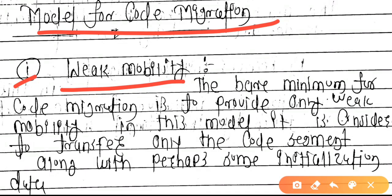The bare minimum for code migration is to provide only weak mobility. In this model, it is considered sufficient to transfer only the code segment, along with perhaps some initialization data. So weak mobility transfers just the code, not the full execution state.